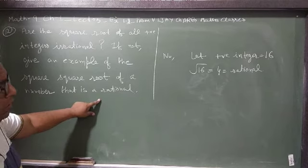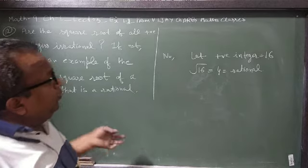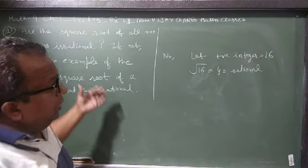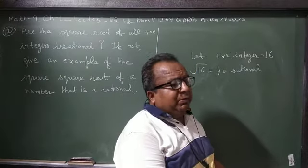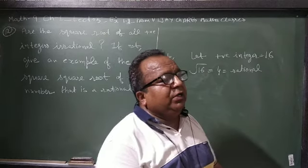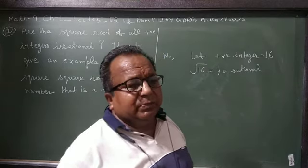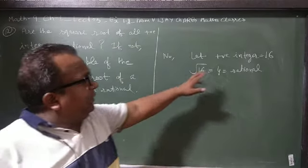So I need to give an example where the square root is rational. We can use 16. Let me take integers: 16. The square root of 16 is 4, which is rational.